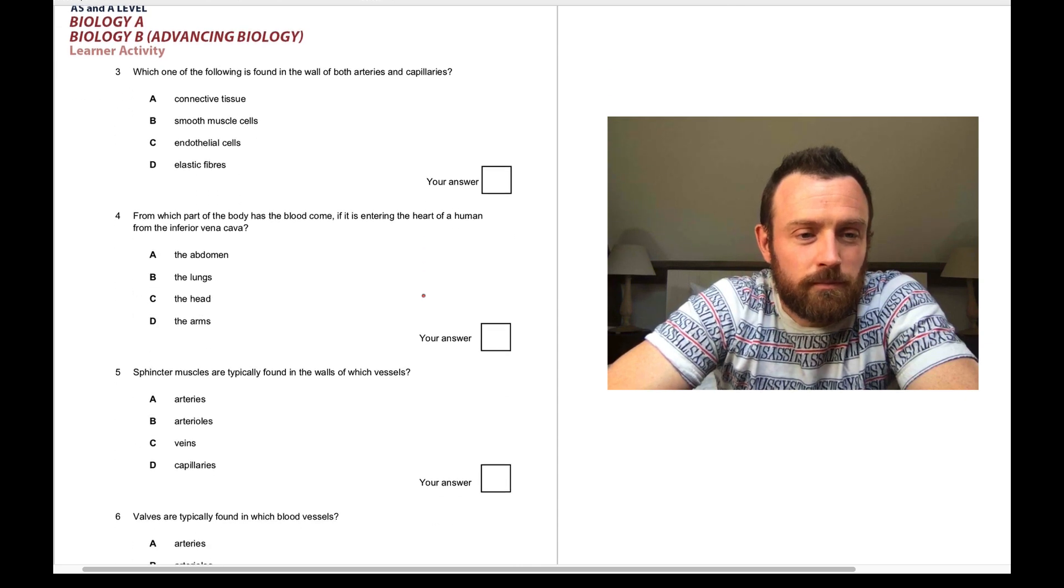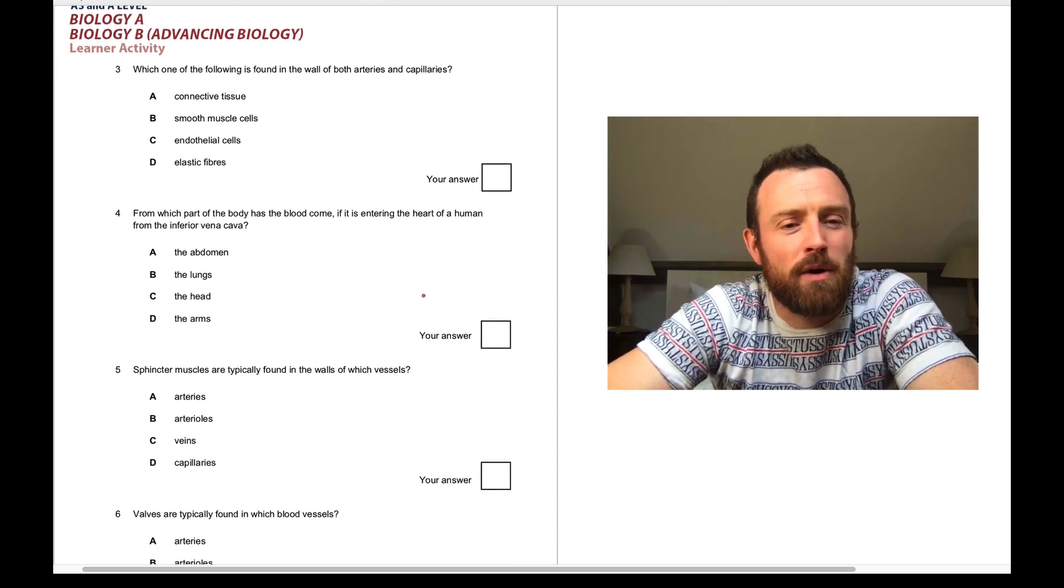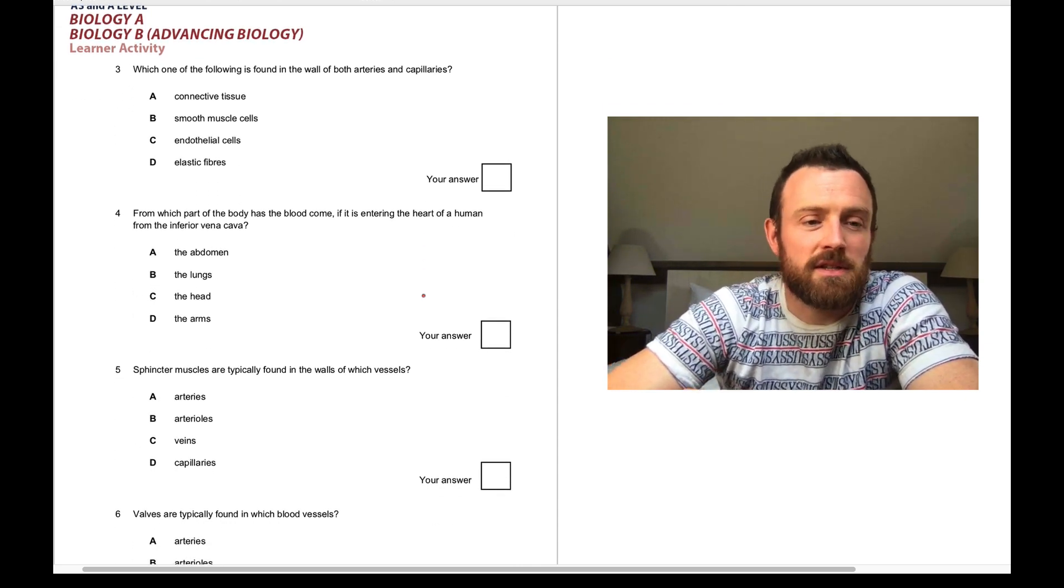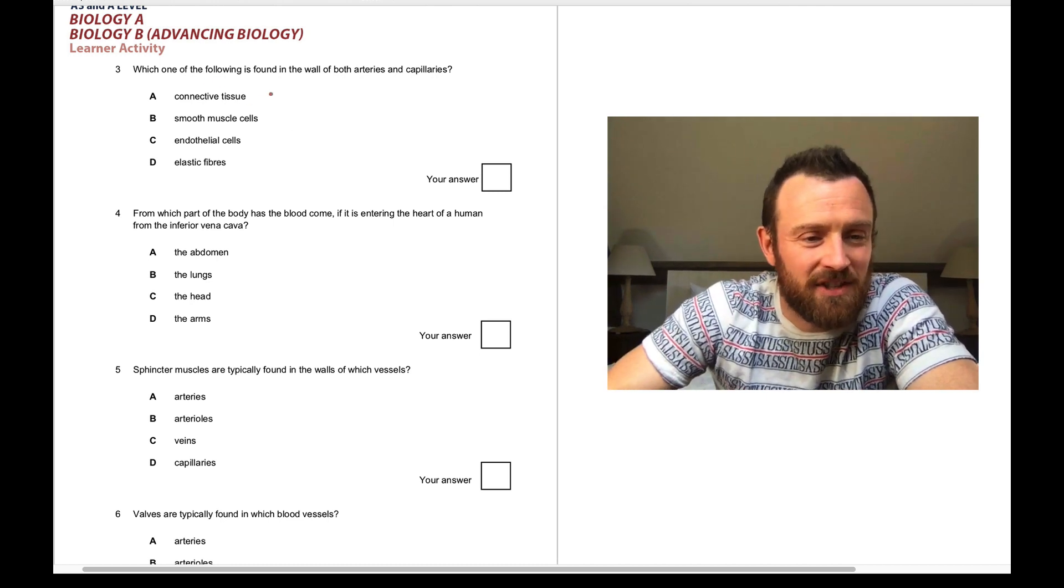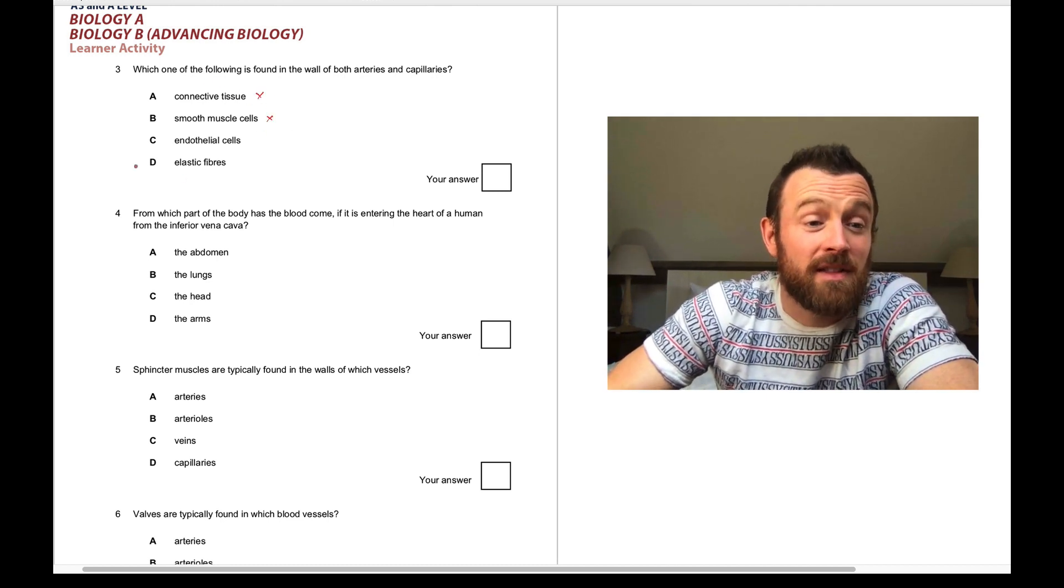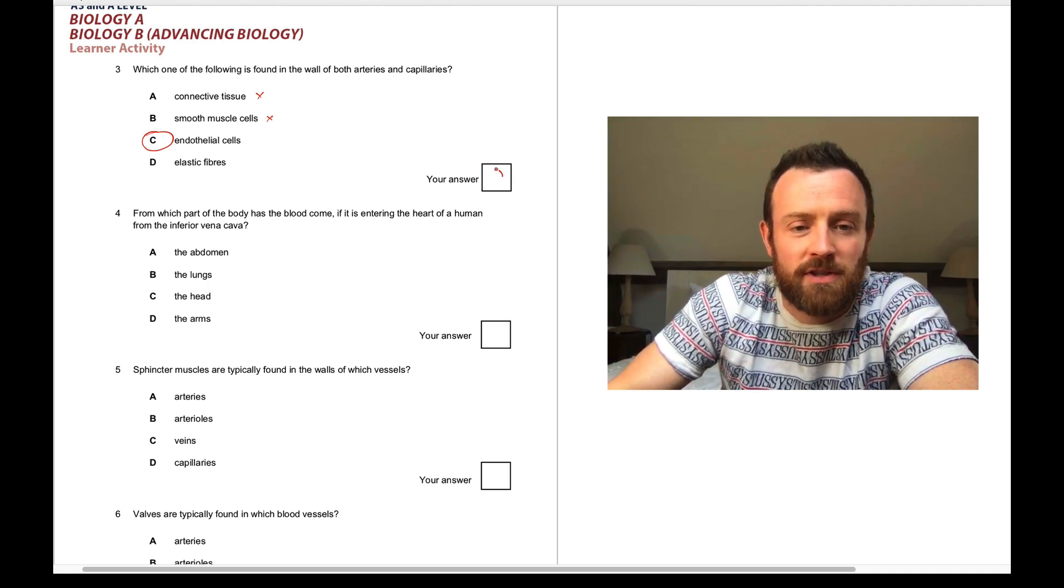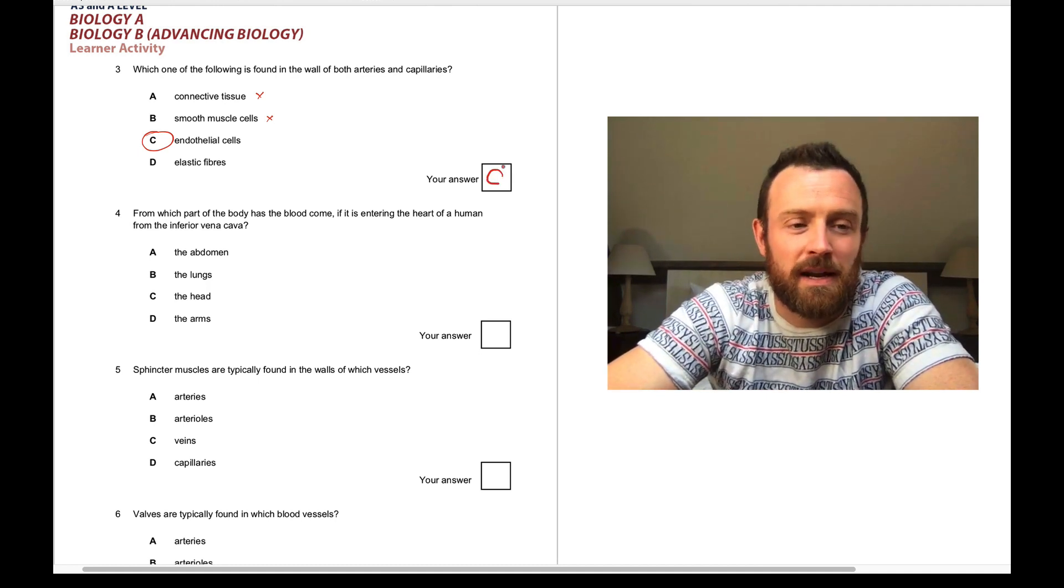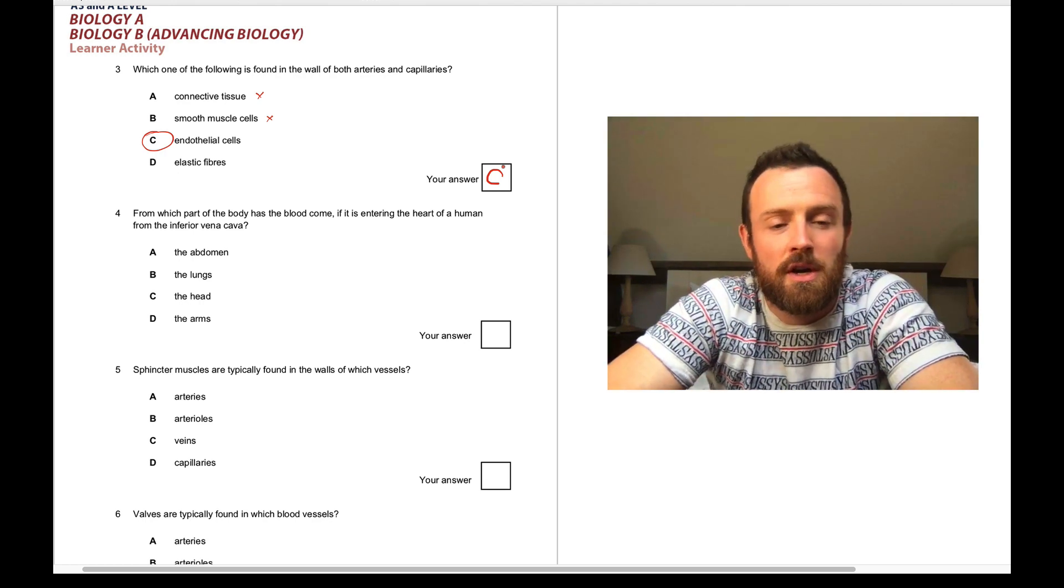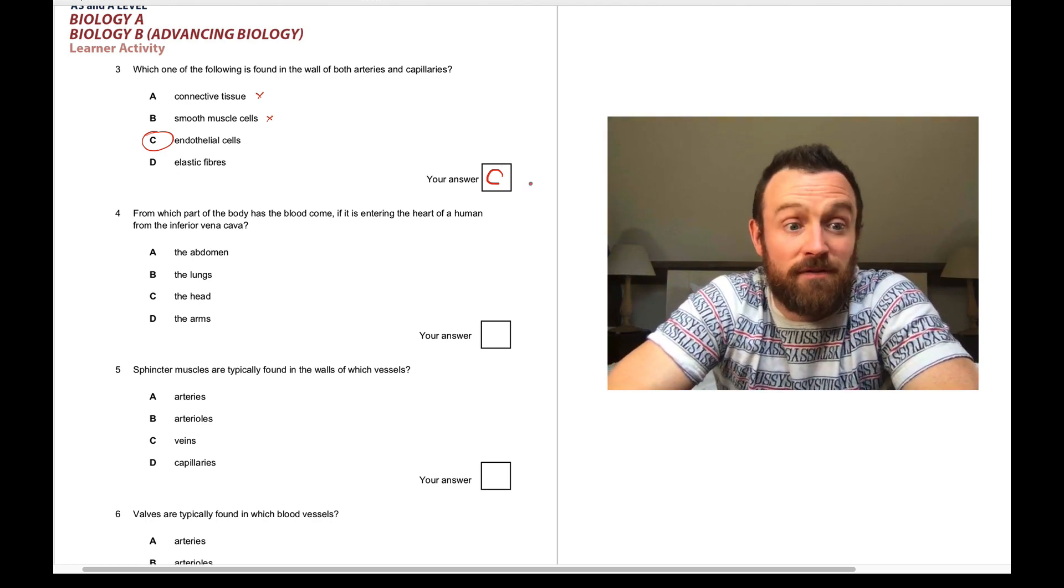Question three. Which of the following is found in the wall of both arteries and capillaries? So capillaries don't have connective tissue, they don't have smooth muscle. They do have endothelial cells. Endothelial cells line both arteries and capillaries. And remember, they enable a smooth, relatively friction-free flow of blood.